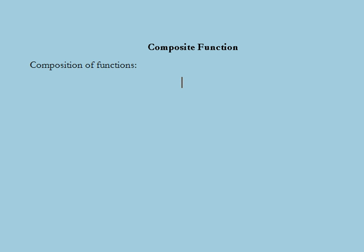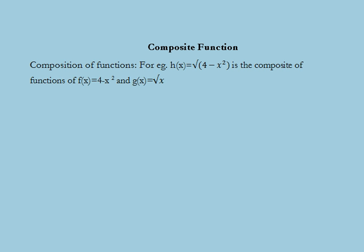We begin with the composition of functions, which is an operation that arises in the context of functions. To illustrate this, consider the example h(x) = √(4 - x²). This function represents a composite function of f(x) = 4 - x² and g(x) = √x.